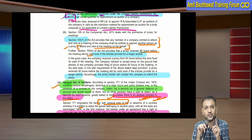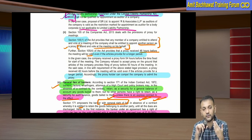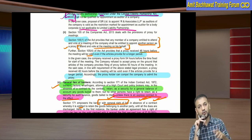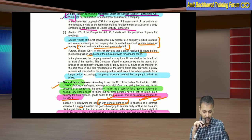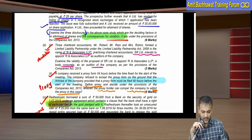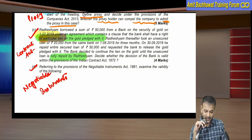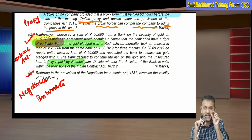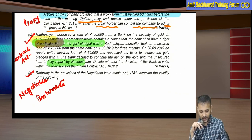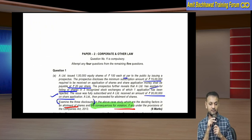Moral of the story: Question number one should not usually be attempted first, because mistakes in it will spoil the image of your answer script. First, choose the normal questions and do those. For question one, read between the words - not just between the lines. Notice how the single word 'particular' in 'particular lien' changed the entire answer. You have to be very, very careful. Thank you so much, we'll meet again.